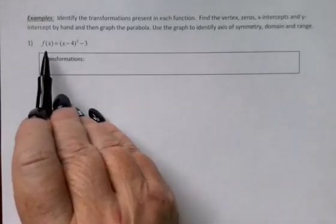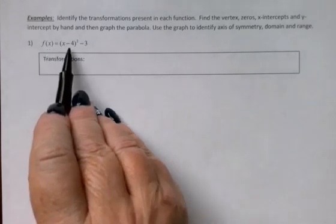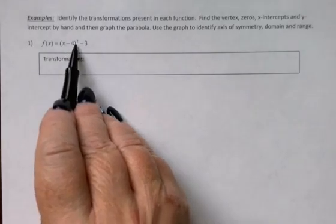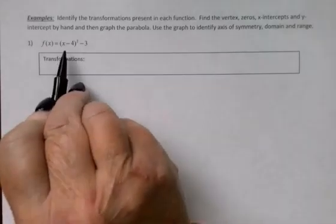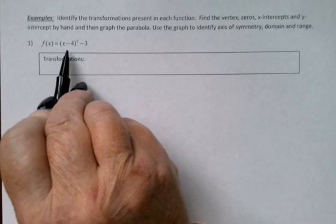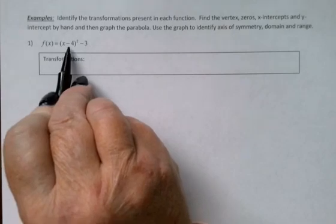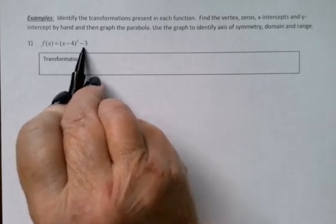I would like to use the idea of transformations to graph the function f(x) = (x - 4)² - 3. Because of the square, I know it's going to be a parabola. Compared to my original parent function, the parabola with vertex at (0, 0), this one has been moved to the right 4 and down 3.